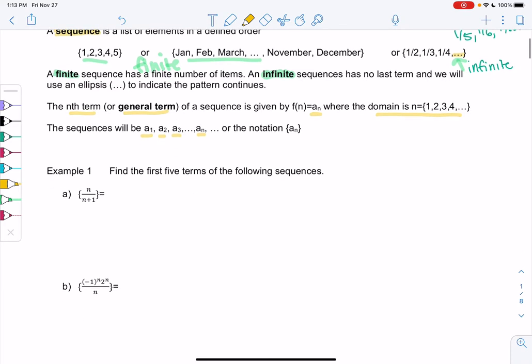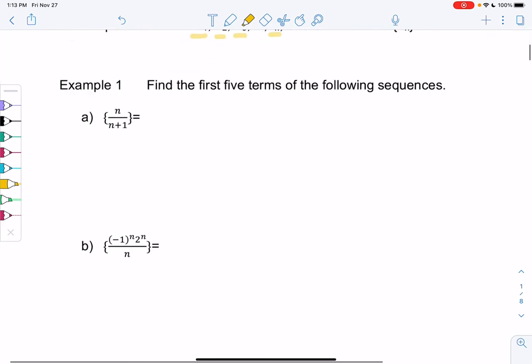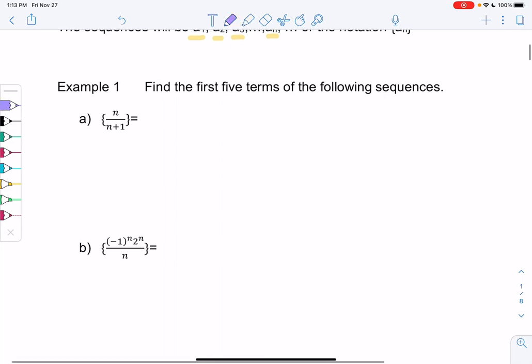So let's check a couple out in example 1. Let's find the first five terms of the following sequences. So we have n over n plus 1. So we'll find a1, a2, a3, a4, and a5. We just plug in 1 through 5. So a1 would be 1 over 1 plus 1, or 1 half, just plugging in for n.